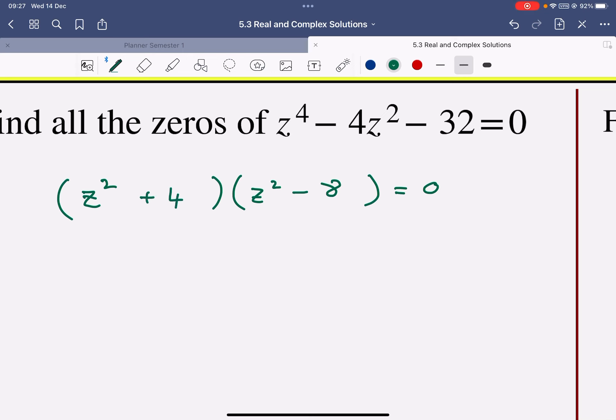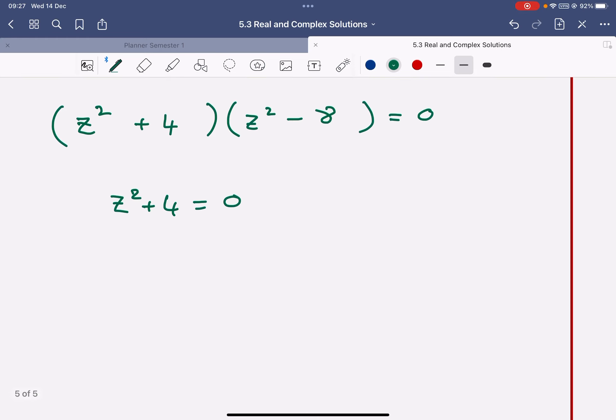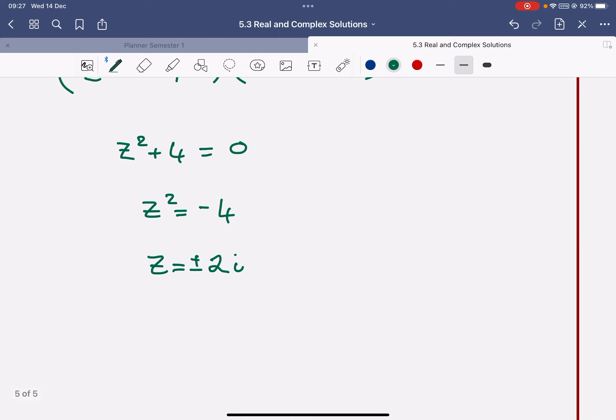So I look at my first bracket and it gives me z squared plus 4 equals 0. So z squared equals negative 4 and z equals the square root of negative 4, which is 2i, square root of negative 1. And I'm going to put plus or minus 2i. That's two of my solutions.